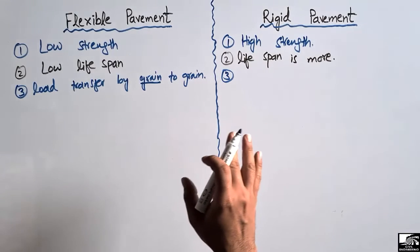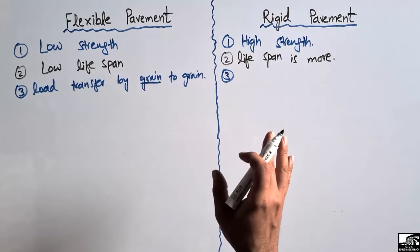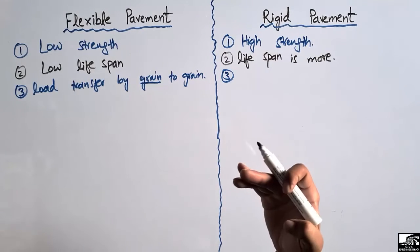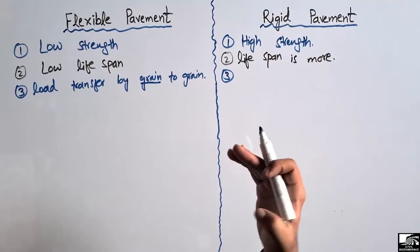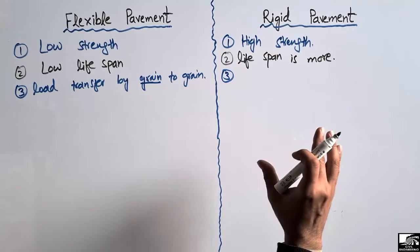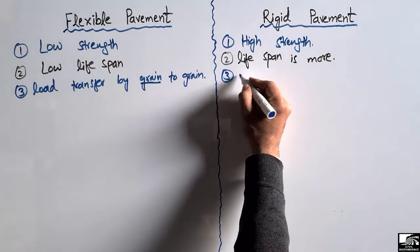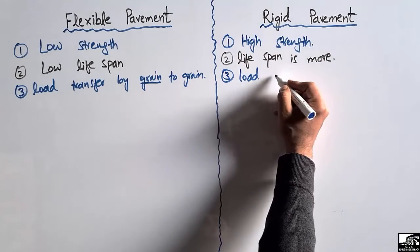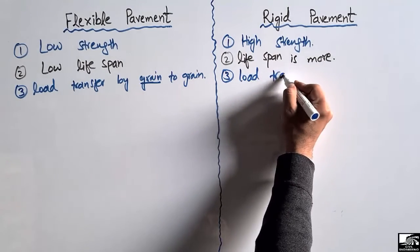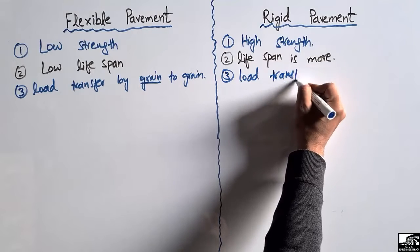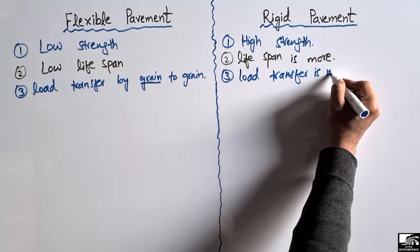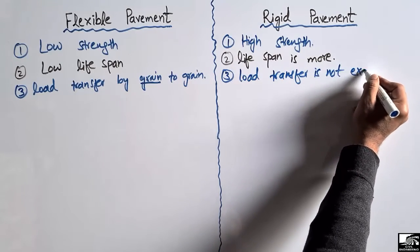In case of rigid pavement, load transfer by grain-to-grain mechanism does not exist. Instead, the load is transferred mainly through slab action.